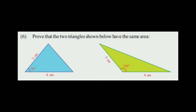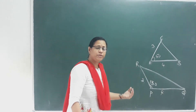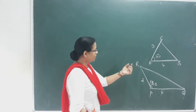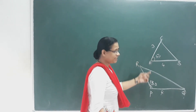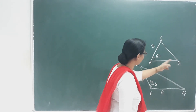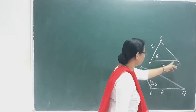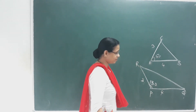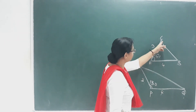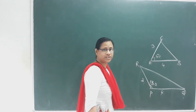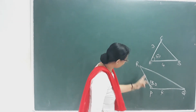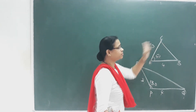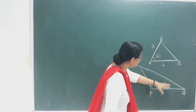Now let's look at the next question: Prove that the two triangles shown below have the same area. In these two triangles, one triangle's base is 4 cm and this triangle's base is 4 cm. This angle is 50 degrees, this angle is 130 degrees, and this length is 3 cm.